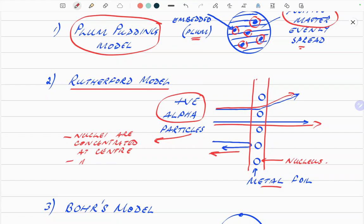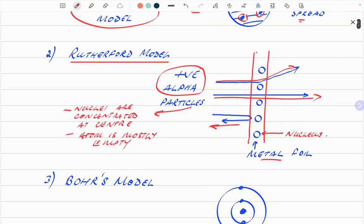What this tells us is that the nuclei are concentrated at center, hence nucleus. The atom is mostly empty, shown by the fact that some of them pass straight through. So that was the first inkling that you had an atom with a nucleus in the middle.